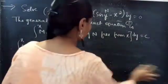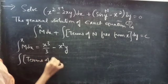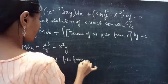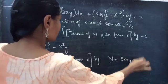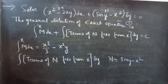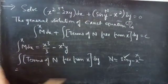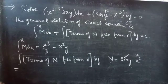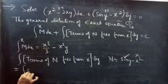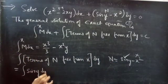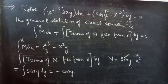Now consider the second integral — the integral of terms of N free from x, with respect to dy. We have N equals sin y minus x squared. The term which does not involve x is sin y. The second term x squared contains x, so we don't take it. This equals the integral of sin y dy, which gives minus cos y.